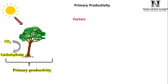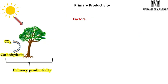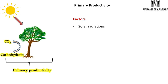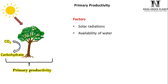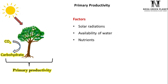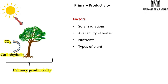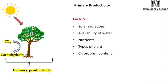Primary productivity — the stored organic matter in the body of plants — depends on a number of factors, for example, solar radiation, availability of water, nutrients, types of plants, and chlorophyll content.